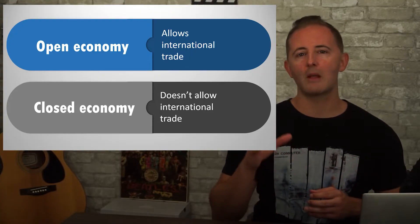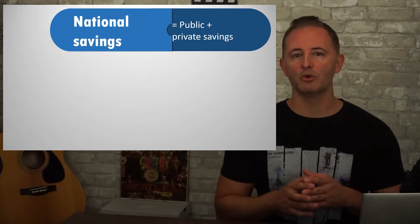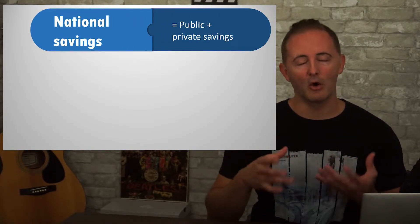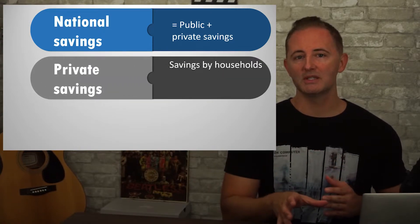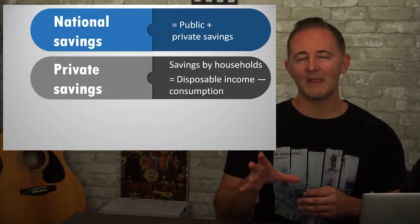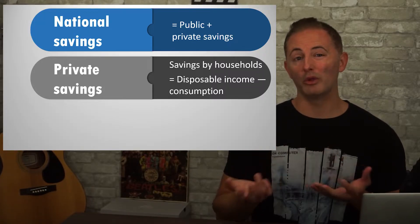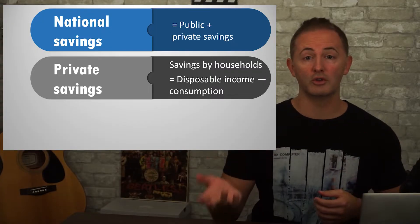In a closed economy that does not allow international borrowing and lending, national savings is equal to public savings plus private savings. Private savings refer to savings by households. We can also say that private savings equal disposable income minus consumption, since the only two things we can do with our disposable income is to either save it or to consume it.